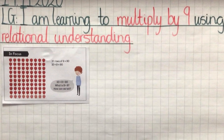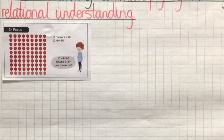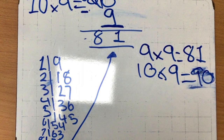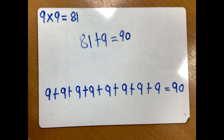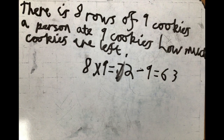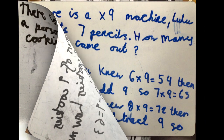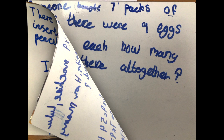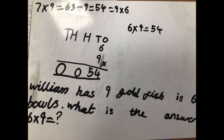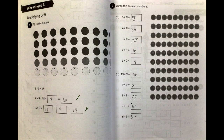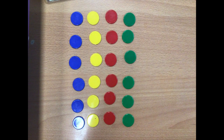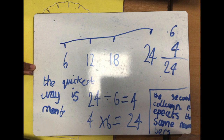I usually pre-model or write up my date and learning goal before the session to save myself a few precious minutes during that lesson. Here are some examples of the children's work on their whiteboards once I've set them off on an activity — they are demonstrating their understanding and their knowledge. We also use a range of concrete resources to help the children aid their mathematical understanding.